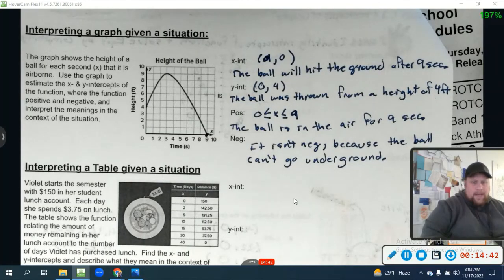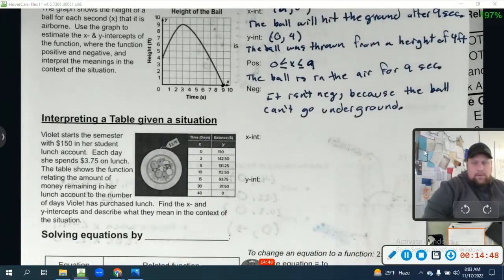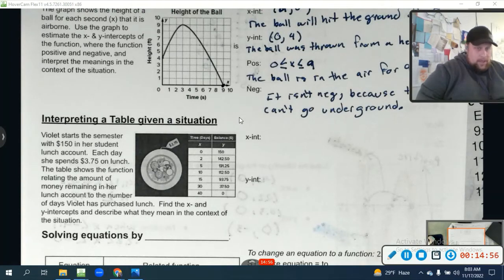Moving on to interpreting a table given a situation. Violet starts the semester with $150 in her student lunch account. Each day she spends $3.75 on lunch. The table shows the function relating the amount of money remaining in her lunch account to the number of days Violet has purchased lunch. Find the x and y intercepts and describe what they mean in the context of the situation.